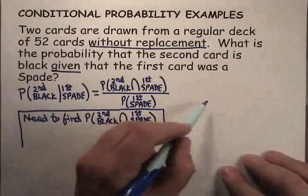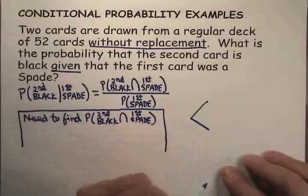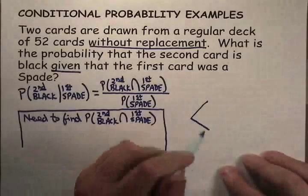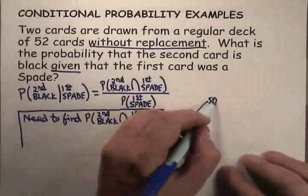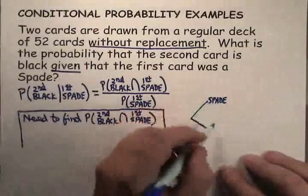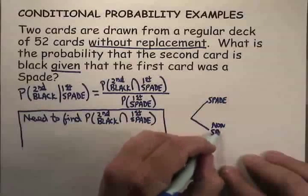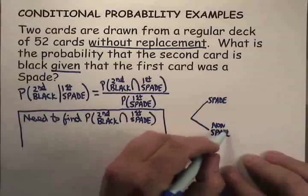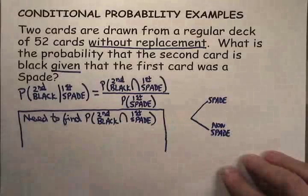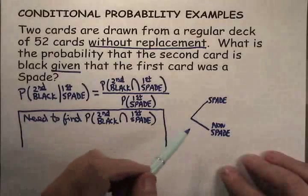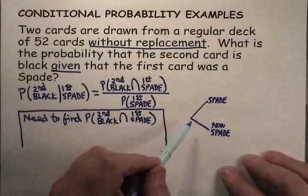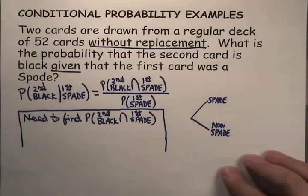On the first draw, I could either have gotten a spade, or I could have gotten something else, a non-spade. In a regular deck of cards, there are four suits, and there are equal numbers of each, so there are 13 cards in each suit.